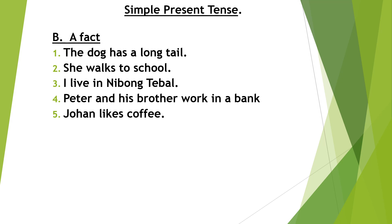Number five: 'Johan likes coffee.' This is a fact — he doesn't like durian, but he likes coffee. It's a real fact. Write your sentence now.